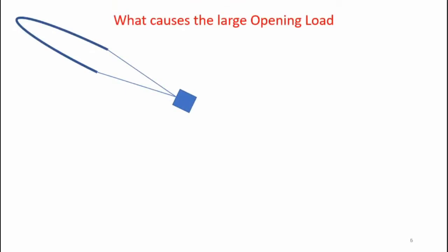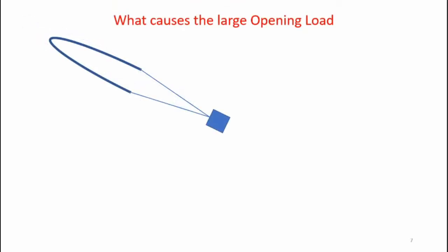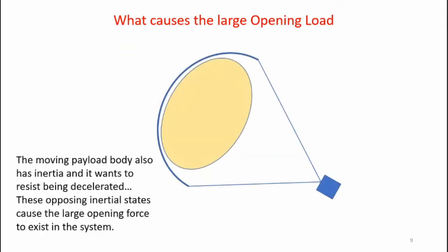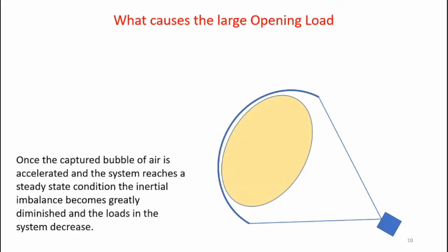Now let's take a look at a simplified animation showing what happens when a parachute inflates. Here's the canopy just after it deploys. As the payload and parachute move through the atmosphere, it scoops up a bubble of air. This air is initially at rest and has inertia, wanting to resist being accelerated. The moving payload body also has inertia and wants to keep moving, so it does not want to be decelerated. It's these opposing inertial states that cause a large opening force to exist during deployment. Once the captured bubble of air is accelerated and the system reaches a steady state condition, the inertial imbalance becomes greatly diminished and the loads in the system decrease.